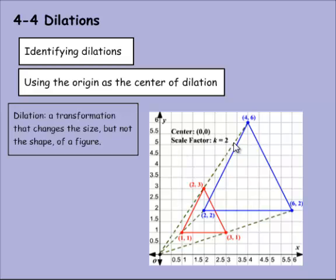The scale factor tells you how much this image is being dilated or how much bigger or smaller it's getting. Here we see a scale factor of 2, so this length is going to be twice as long as that length. This one is 4 units apart here and 8 units apart here.